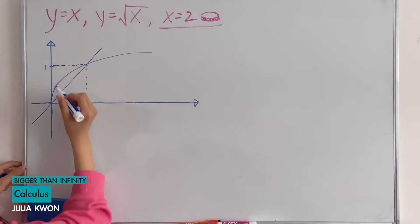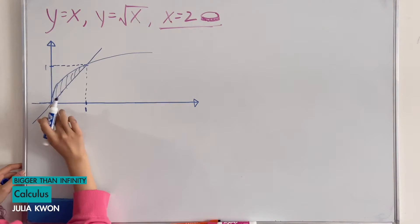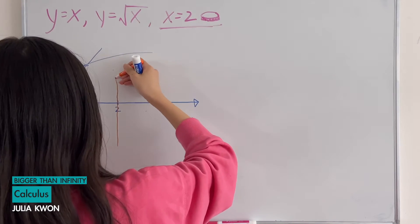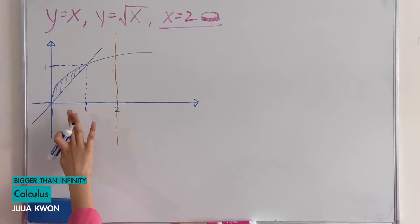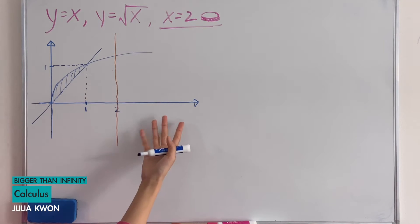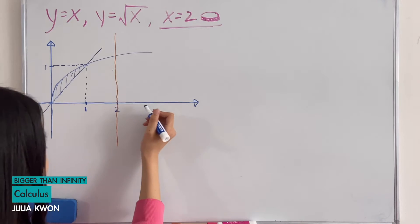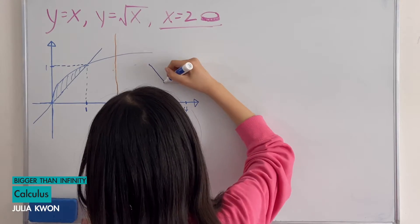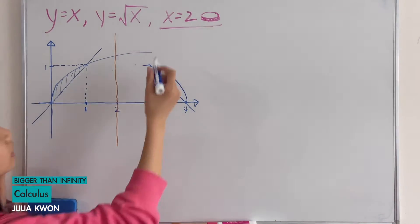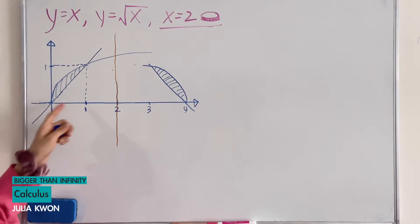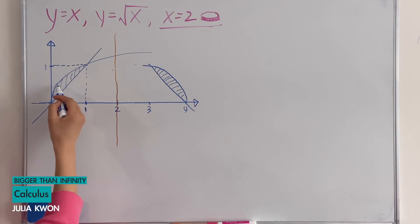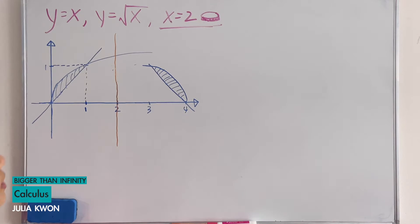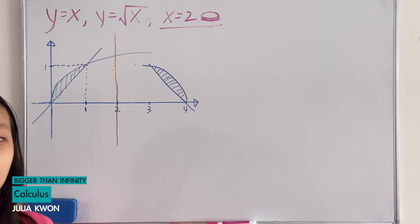We're going to rotate this region around the line x equals 2. I'm going to draw everything mirrored to show the rotation. If we rotate this to find the volume, we're going to use washers — which means we're going to subtract the larger disk from the smaller disk.